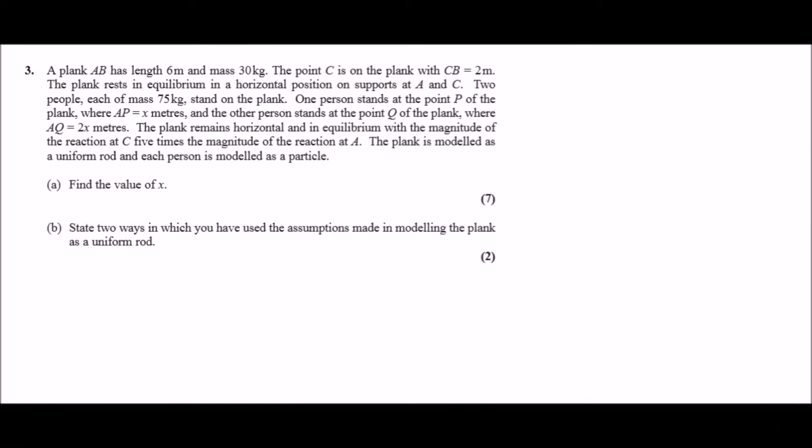Okay let's go. According to this question it says that a plank AB has length 6 meters and mass 30 kg. The point C is on the plank with CB equals 2 meters. Before we carry on let's go ahead and draw this plank here. So let's assume the plank looks a bit like this, so just a long one. So we call this A and B.